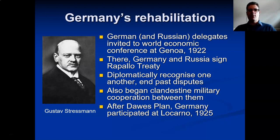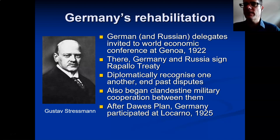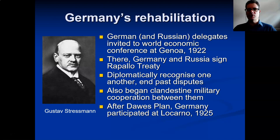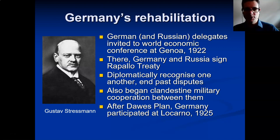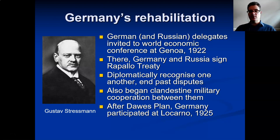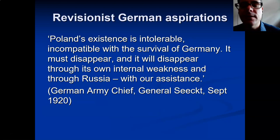The Americans provided money to Germany; the Germans used this to pay off their reparations to Britain and France; the British and French used that money to pay off their own war debts to the United States. This circular flow of money in the 1920s worked as long as the United States was in a position to play the role of the world's major creditor. The problem would come — as it eventually did — when the United States was no longer able to provide that credit.